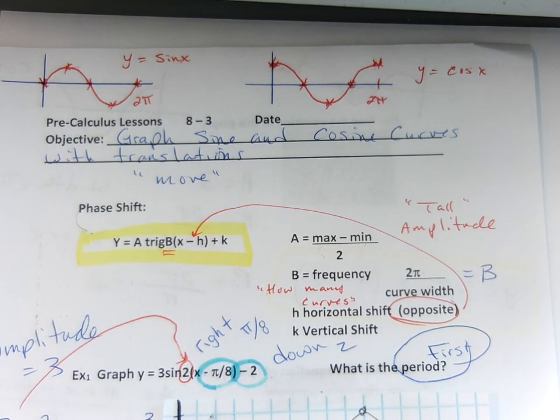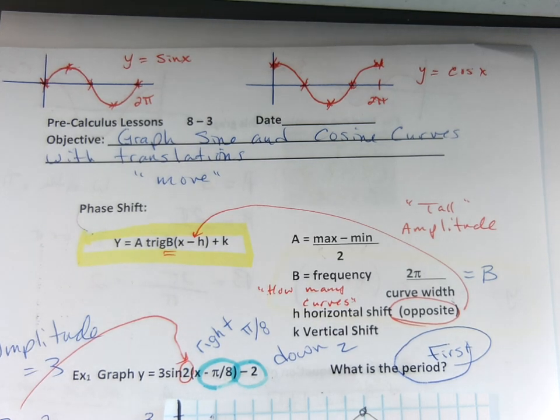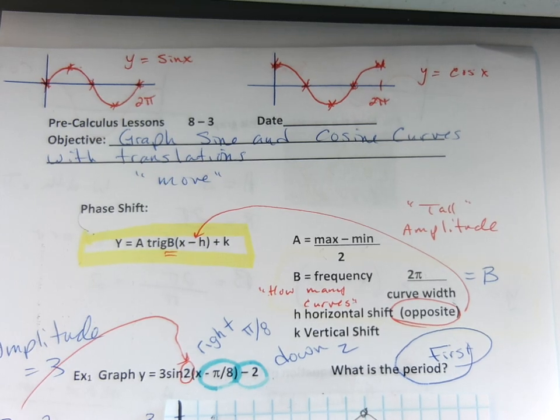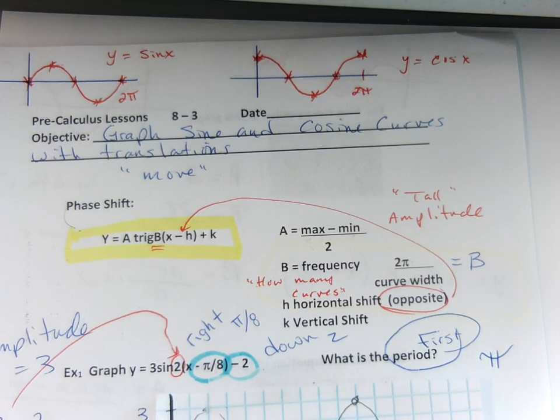So I took every important point, I shifted over π/8, down 1, over π/8, down 1, over π/8, down 1, all the way through, over π/8, down 1, and then I re-graphed my curve. The period of this is obviously π, because the width is from 0 to π is the period of 1.